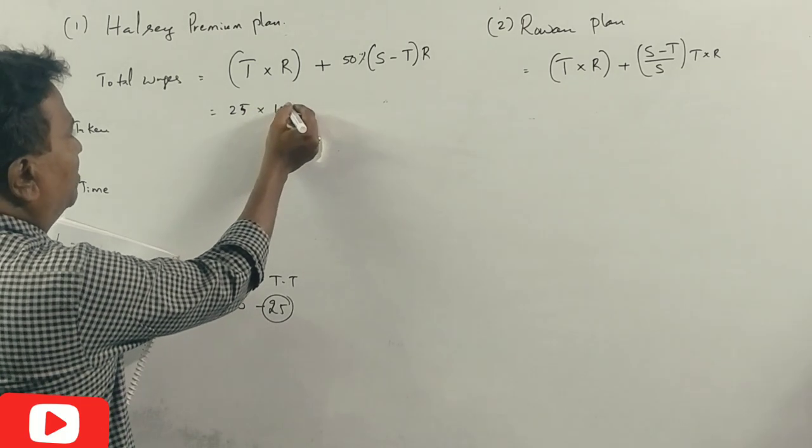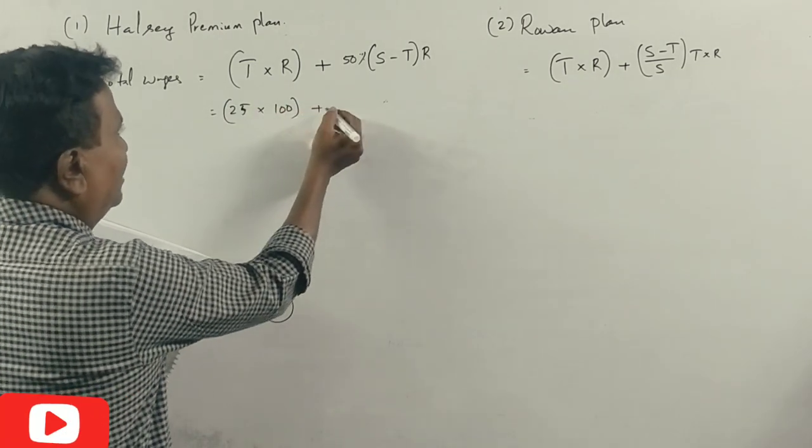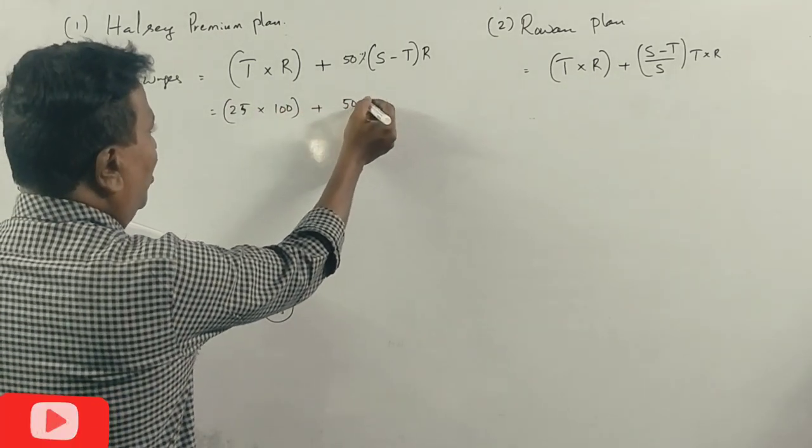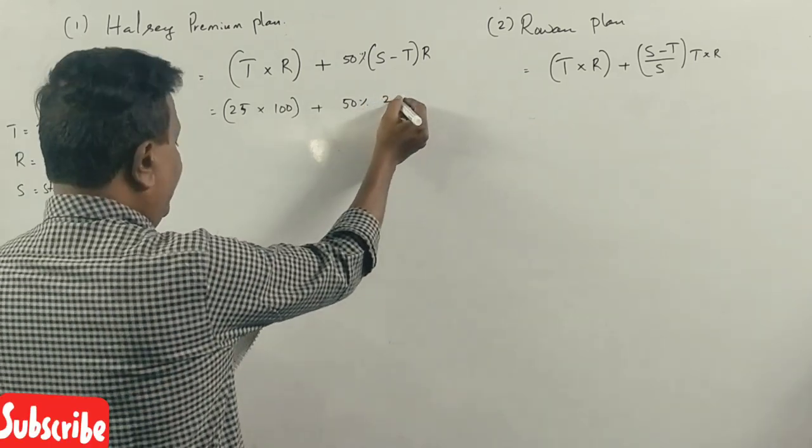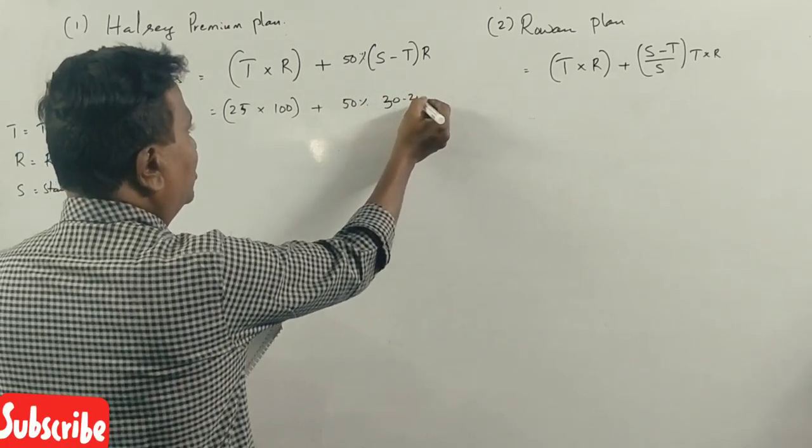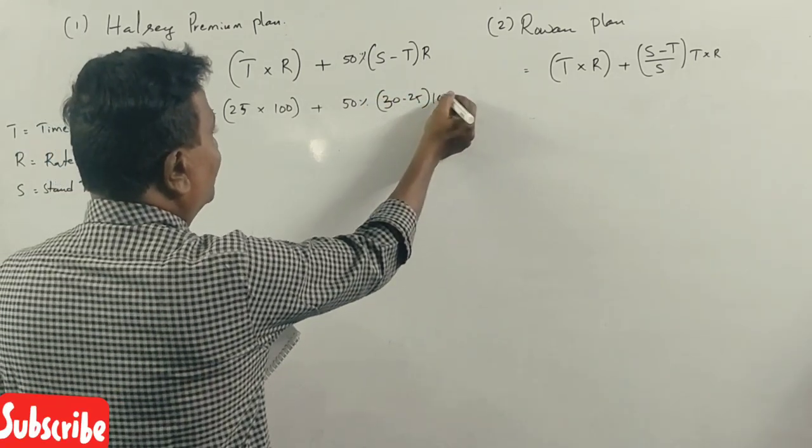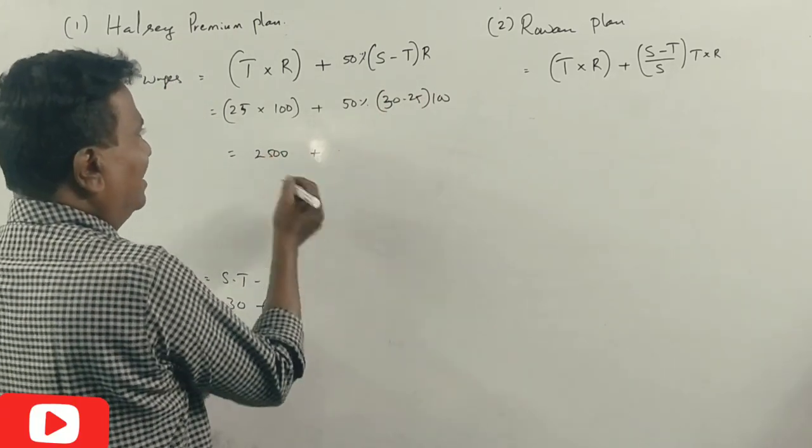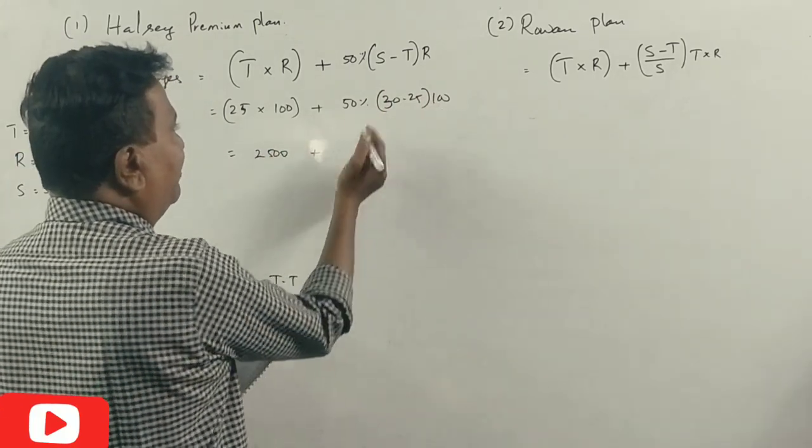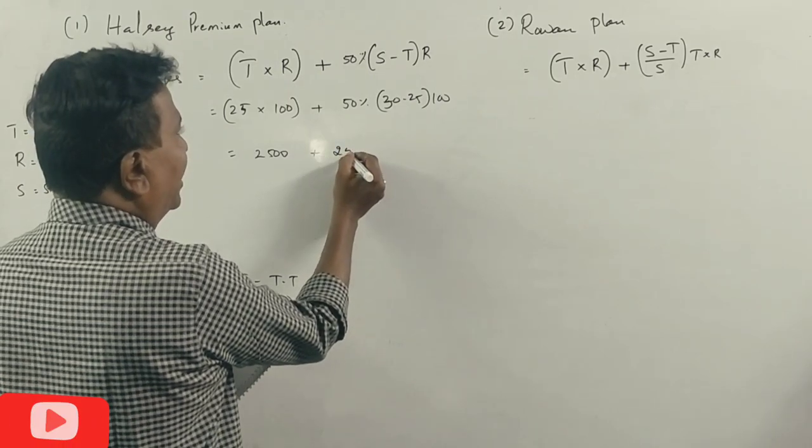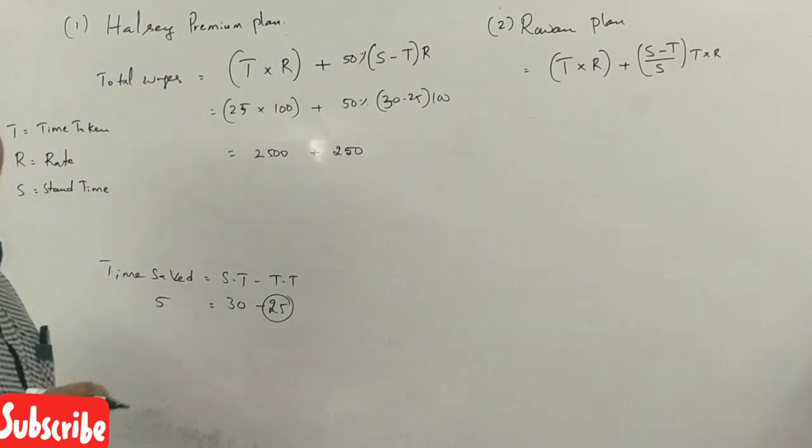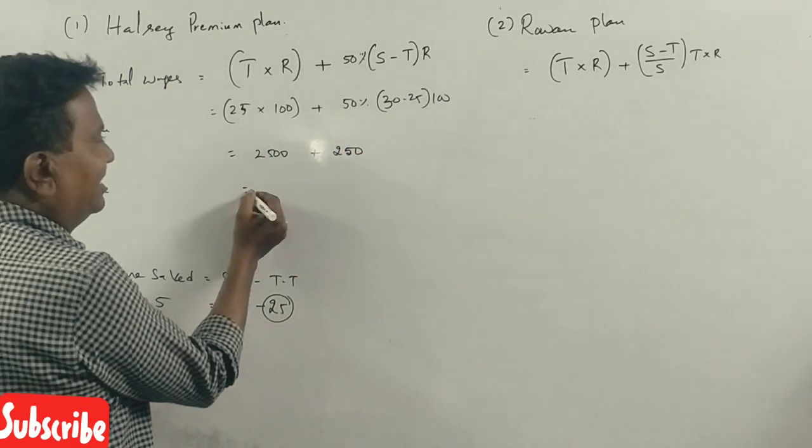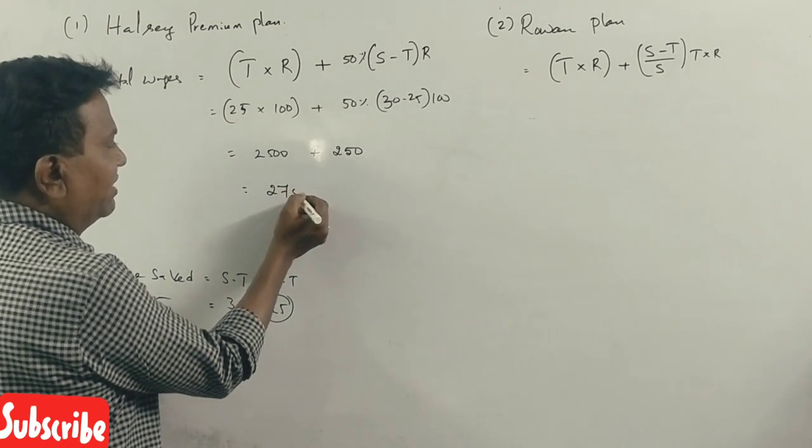Under Halsey Premium Plan: time taken is 25 and the rate is 100 rupees per hour, plus 50% of (30 minus 25) into 100. That's 2500 plus 250, so total wages are 2750 rupees.